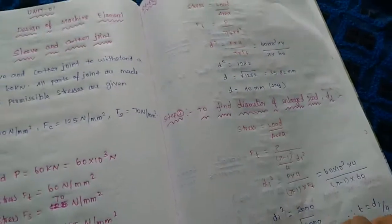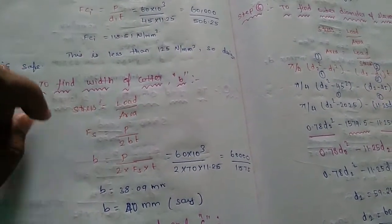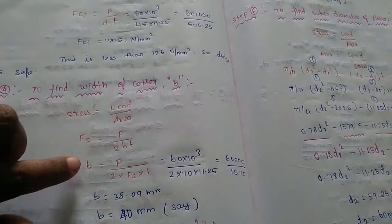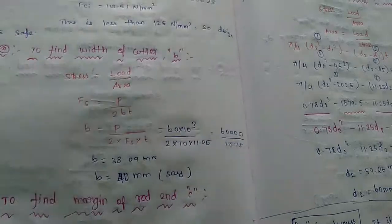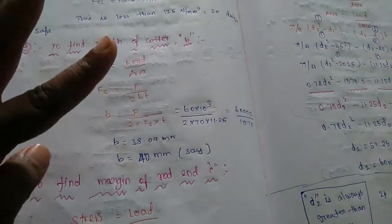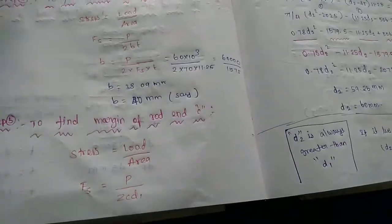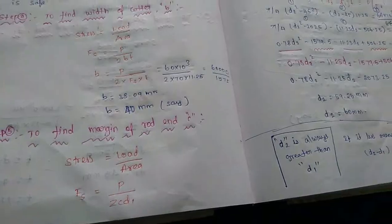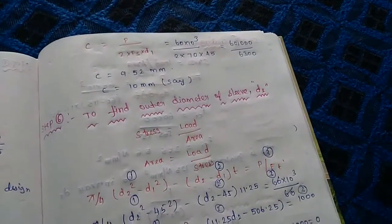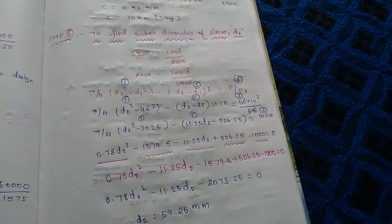Now using Ft, then Fc (crushing stress), then Fs (shear stress). For shear: Fs = P / (2 · t · d1), so P = Fs · 2 · t · d1, giving t = 30 mm approximately. The procedure is: Step 1 — find D; Step 2 — find d1 (check); Step 3 — find b; Step 4 — check margin. Stress = load/area with Fs = P / (2 · π · c · d1) and c = 2πcd1. To find c, use Fc · d2, then check d2.